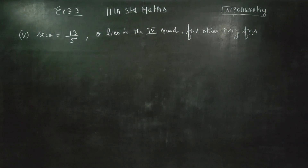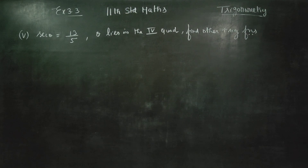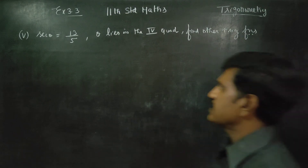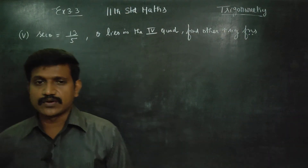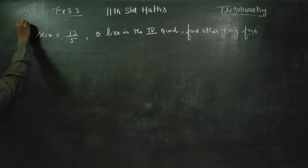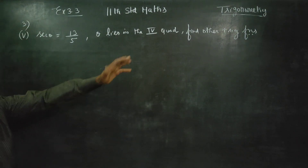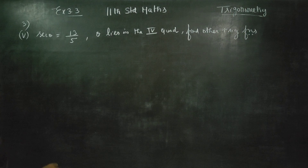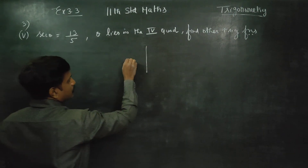Hello 11th standard students. I am Metro Karnagaran. In exercise number 3.3, sum number 3, 5th subdivision: secant theta is equal to 13 by 5. Find the other trigonometric functions. Theta lies in the fourth quadrant.